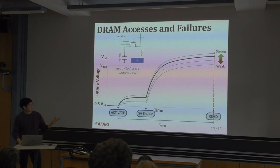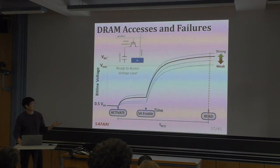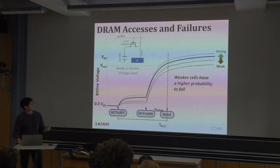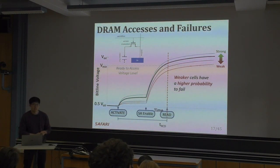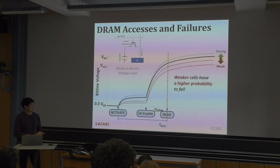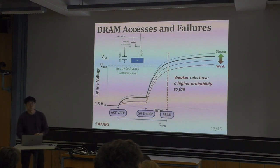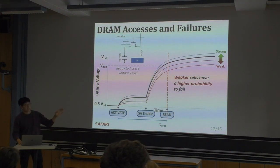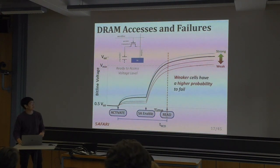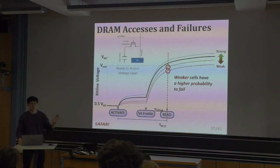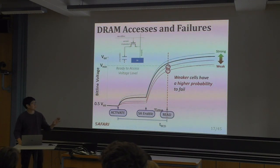When we reduce TRCD, we are reading faster but start to see faults in some cells, because those cells may not have reached the Vmin threshold yet. The lower you are below Vmin, the higher the probability of failure.